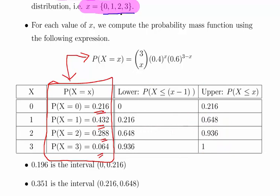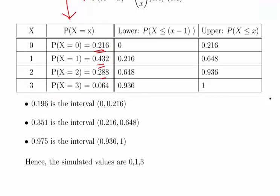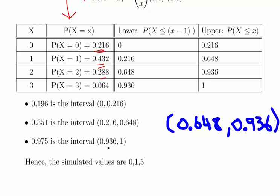The intervals are as follows: 0 to 0.216, then 0.216 to 0.648, the next interval is 0.648 to 0.936, and the last interval is 0.936 to 1.